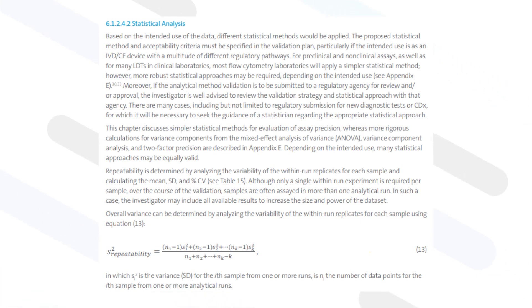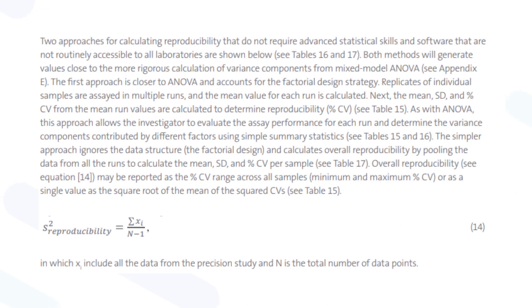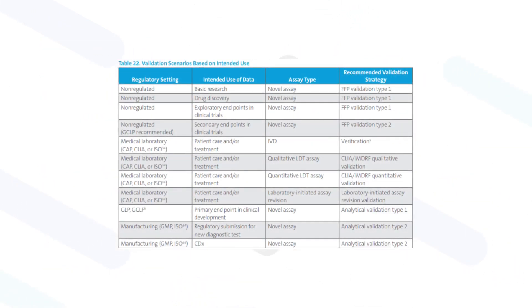Similarly, overall reproducibility is calculated by pooling data from all runs to calculate outcomes. Both repeatability and reproducibility are reported as the percent CV range across all samples, depending on the intended use of the assay and associated regulatory status.